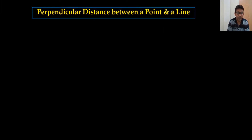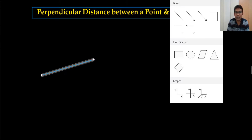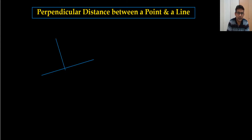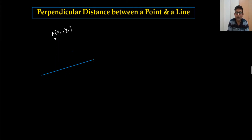For this I need a line, and I want to find the distance between this line and a point. For example, the point is here A, and the point has coordinates x1 and y1. The perpendicular distance means the angle between this point and this line — when I draw a line to find this distance, this angle will always be 90 degrees. The equation of this line I can suppose is ax plus by plus c equals zero.